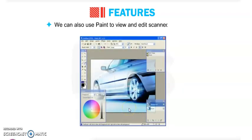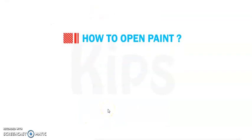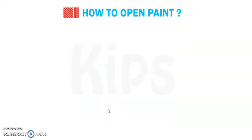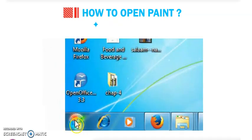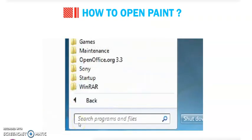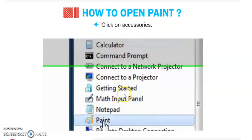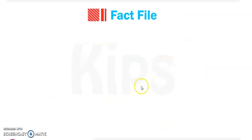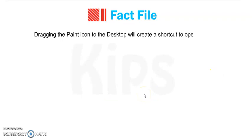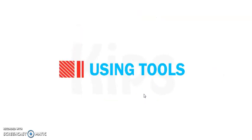We can also use Paint to view and edit scanned pictures. First, we will learn about how to open Paint. For this, you have to click on the Start button, go to All Programs, then Accessories, then click on the Paint program. Dragging the Paint icon to the desktop will create a shortcut to open Paint.